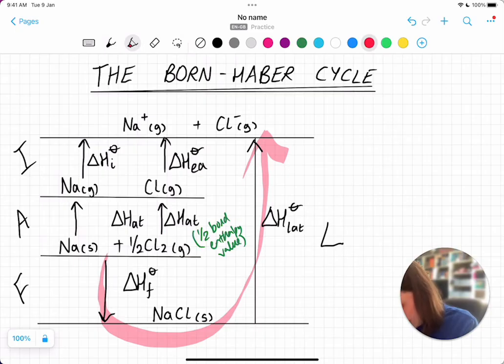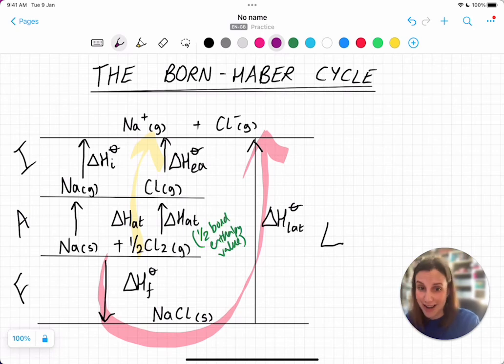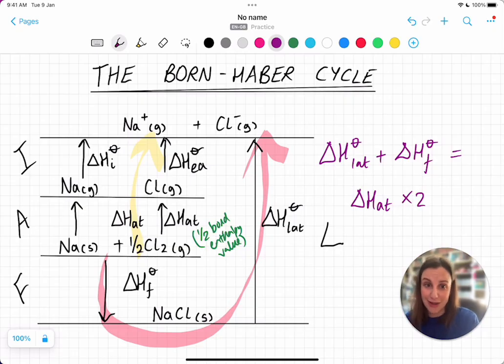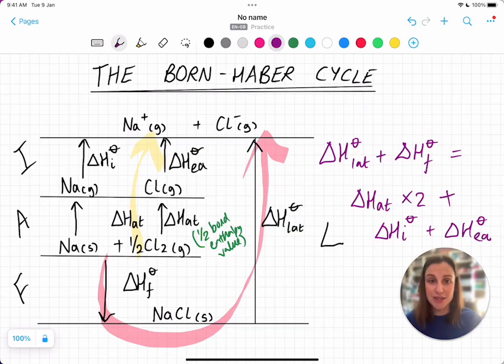What we're going to say is in every case, your delta H lattice plus your delta H formation is going to equal the delta H atomizations, times two of them for the non-metal and the metal, plus your delta H ionization, plus the delta H electron affinity. And that's the summary of how you're going to get that calculation done, depending on the values that you're given and how you're going to put it in. You can rearrange that whole thing. That is the summary of how the Born-Haber cycle works.